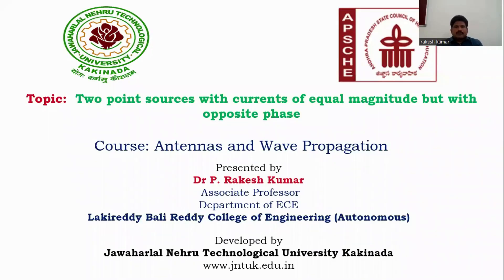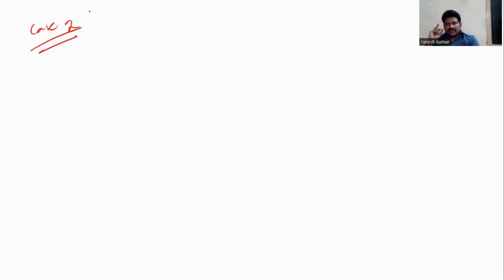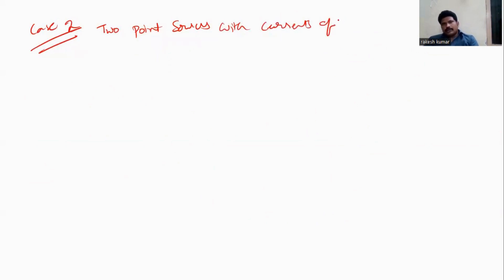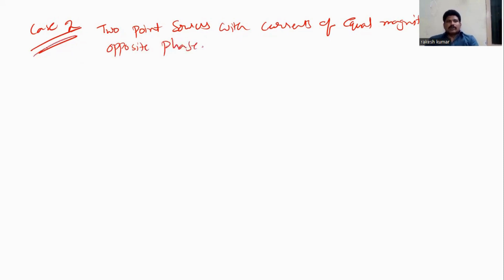In this video, we will discuss two point sources with currents of equal magnitude but with opposite phase, which is Case 2. Case 1 was two point sources with equal magnitude and same phase. Here in Case 2, the only difference is that the magnitudes are equal but the phases are opposite.